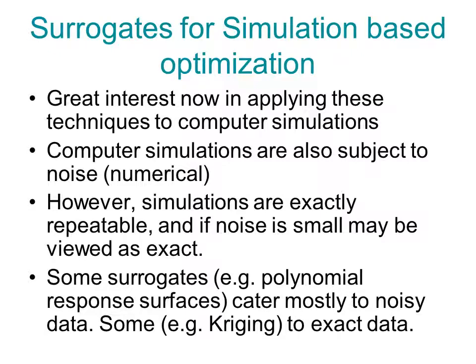Today there is more interest in surrogates for simulation-based optimization than for experimental optimization. Computer simulations also have noise, mostly numerical noise, for example due to discretization. But this noise is hidden from the user in that the simulations are repeatable. You run the simulation again, you get the same results. While when you run an experiment again, you will get different results.